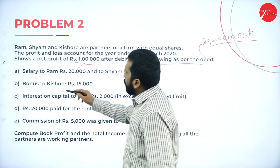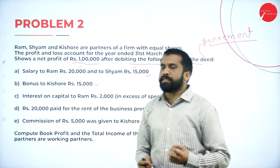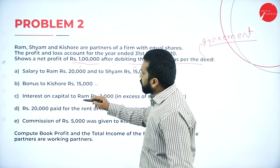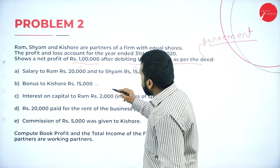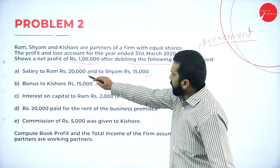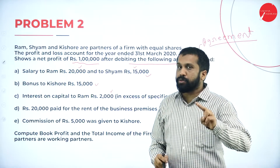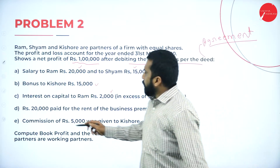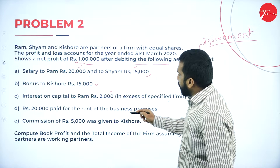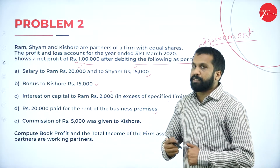Bonus to Kishore is 15,000. Whatever bonus given to Kishore we are supposed to take. Interest on capital to Ram is 2,000 in excess of the specified limit — so we take 2,000. Then rupees 20,000 was paid for the rent of business premises. These are the expenditures they made.